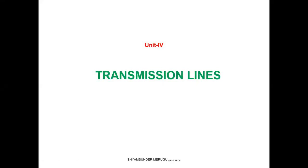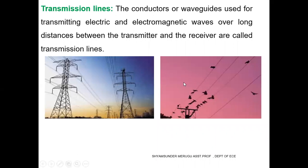Hello everyone, myself Shamsundar Mergu. Today I will talk about the transmission lines — the definition and the types of transmission lines in this video lecture. Here we have two pictures showing about the transmission lines. Basically, transmission lines are the conductors or waveguides used to carry or transmit the electric or electromagnetic waves over long distances from the transmitter to the receiver. In this picture, the transmission lines we are seeing are the overhead transmission lines used to carry electric or power signals, and here the transmission lines are called as a telephone transmission line.